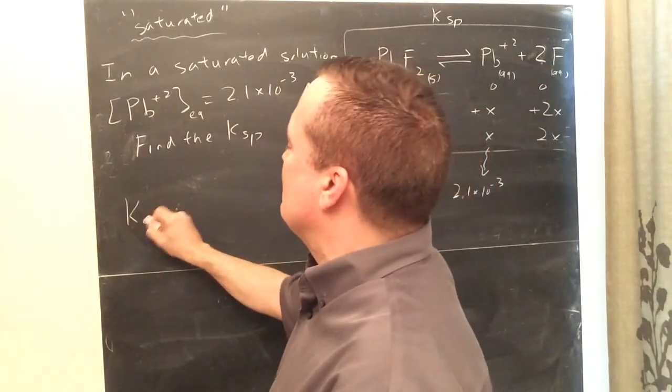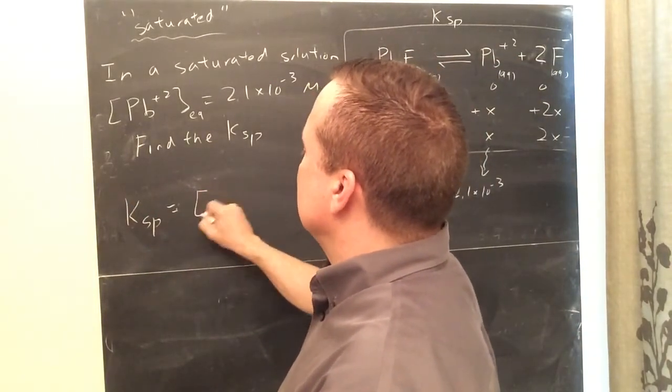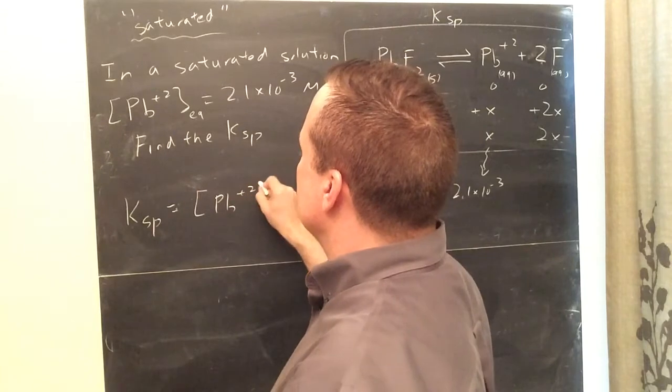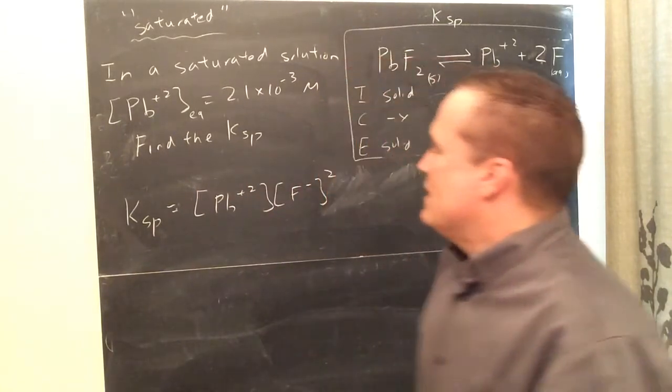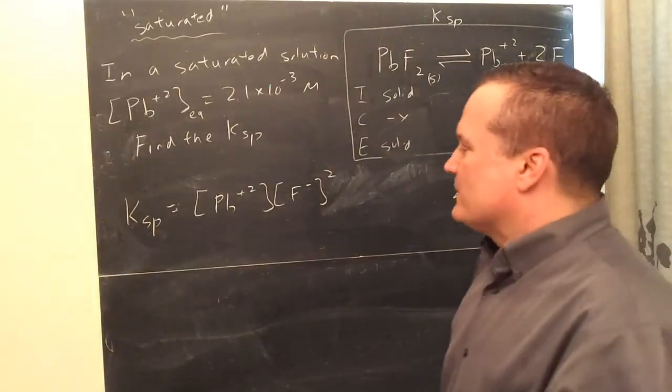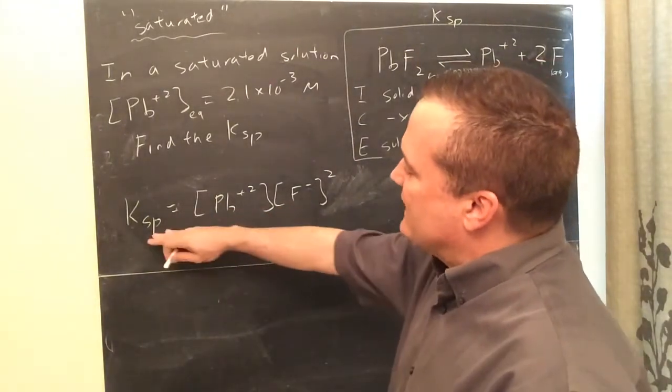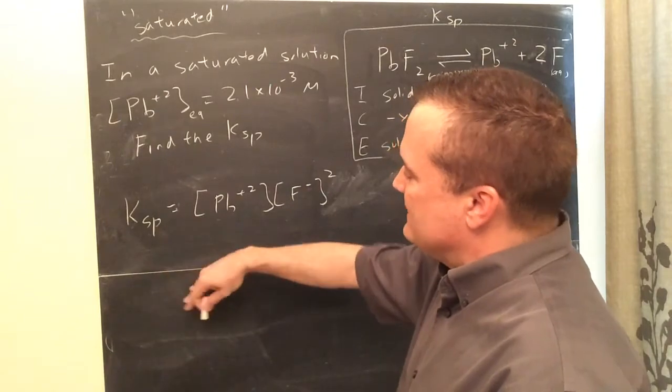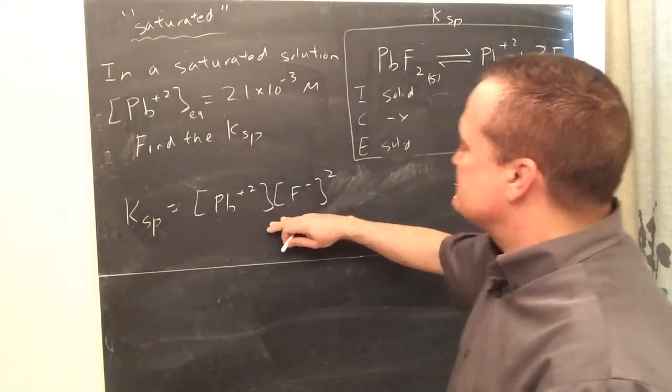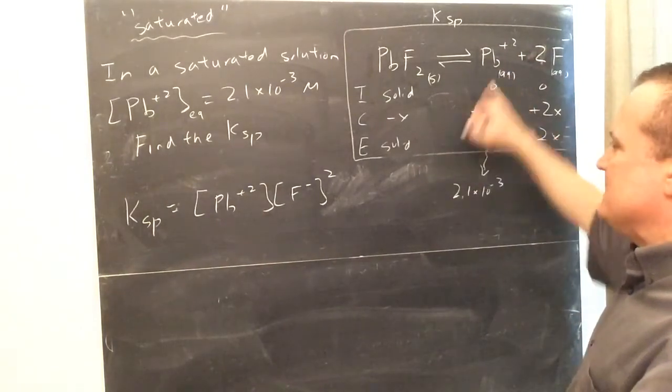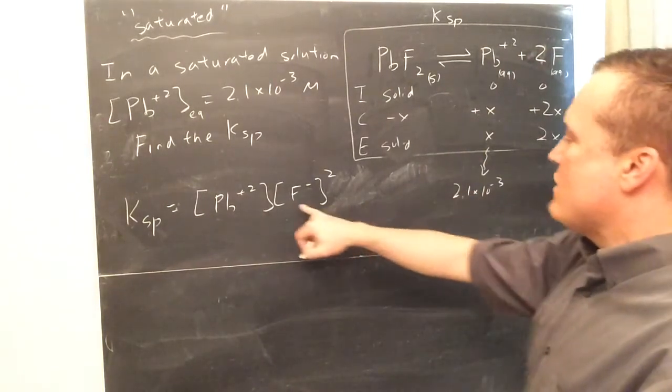And if they give you this number, and they want you to find the KSP, then you say, okay, well, KSP equals, write your K expression, Pb plus 2 times F negative squared. Okay, if it were, again, if it were one of the other problems, if you had a denominator, if you're doing a KA or a KB or the KP, KC, you write the expression, you say, okay, I know Pb plus 2 is 2.1. What is F going to be?